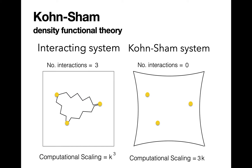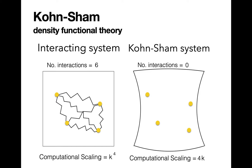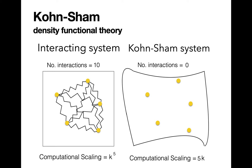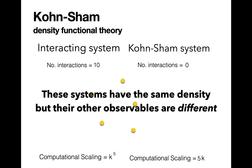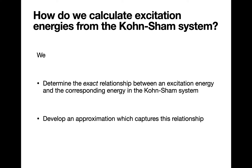As more electrons are added, the number of interactions within the many-body system increases, while the Kunsham potential continues to adapt in order to ensure that the non-interacting density equals the many-body density. As the Kunsham system is fully non-interacting, the computational cost of modelling the system increases linearly with the number of electrons, while the many-body system scales exponentially. Although the electron density of the exact Kunsham system is defined to be that of the many-body system, the other properties of the Kunsham system do not necessarily correspond to many-body observables.